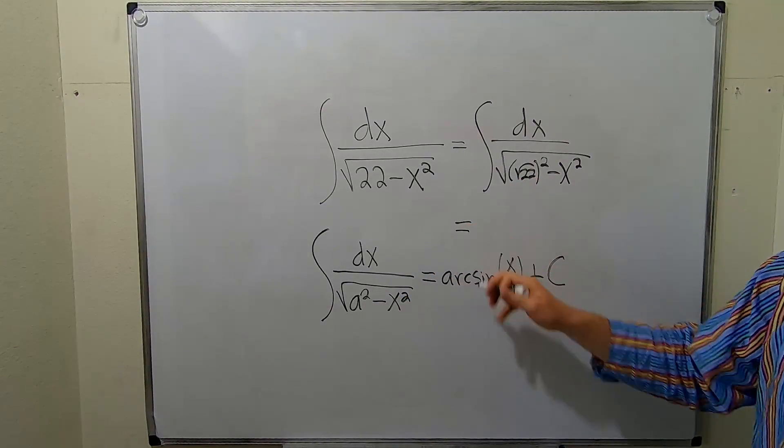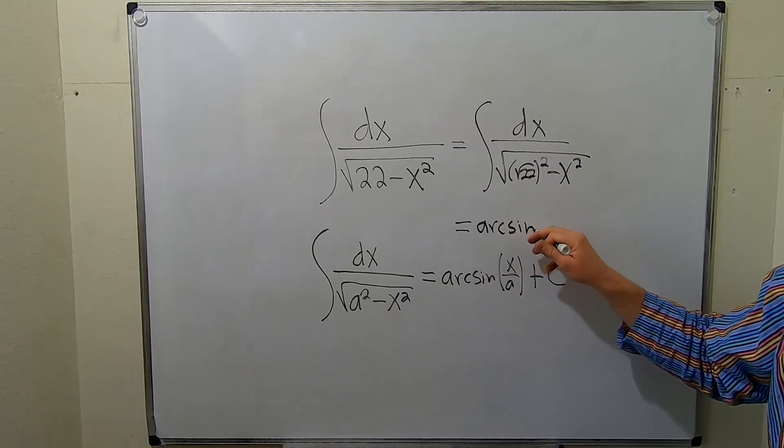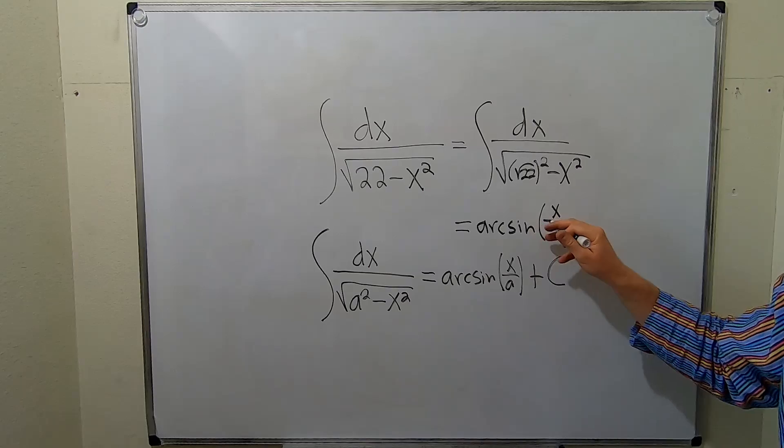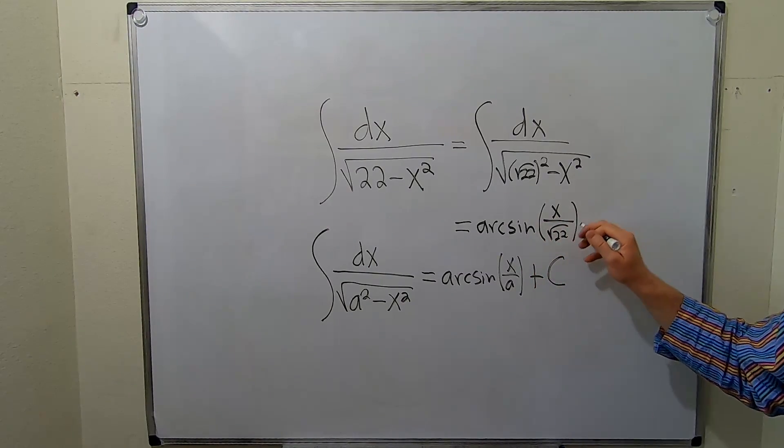So this will be equal to, so now you drop the integral sign. So arcsine of x over a. So the square root of 22 plus our constant c.